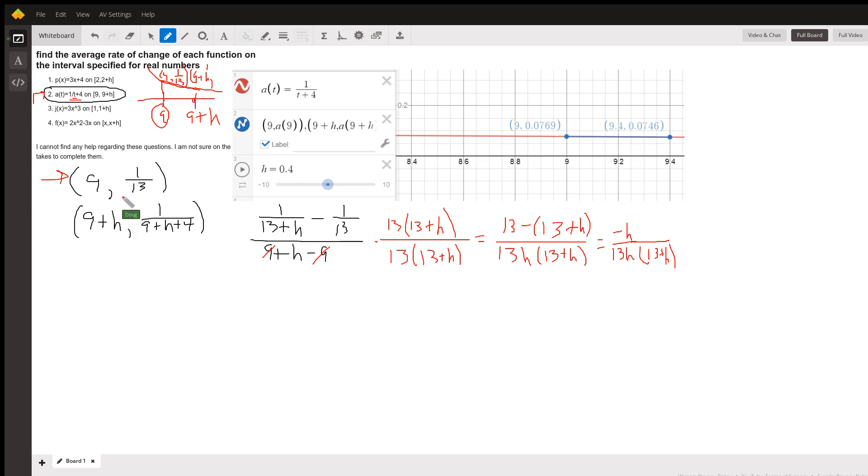The average rate of change means the change in y over the change in x. For every change in x, how much is the y value changing? And that really is the slope of the line connecting these two points.